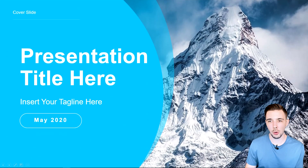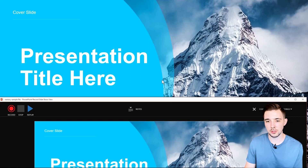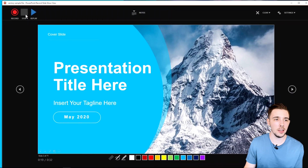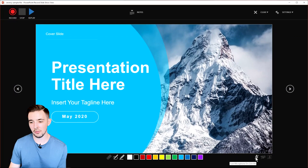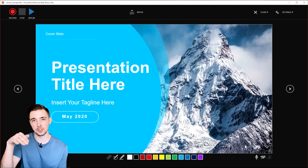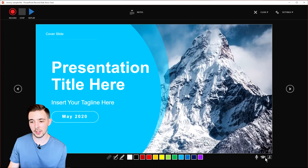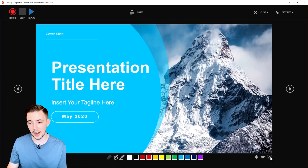The next feature is 'Record Slideshow.' Clicking it opens your first slide along with a recording window — if you have a second monitor it pops up there. Down at the bottom you'll see options to include audio and video. Turning on audio then lets you enable video as well. You can click to open your webcam and use the 'Turn on camera preview' option to toggle it on or off.